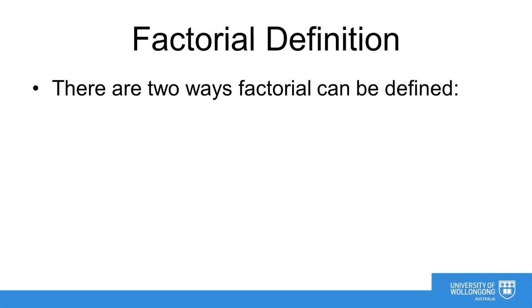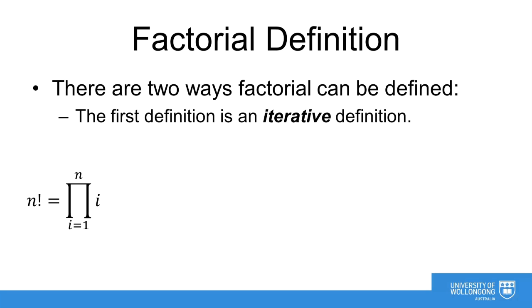But let's look at a more mathematically rigorous definition of the factorial function. There are two ways we can define the factorial. The first is an iterative definition. We see here that n factorial equals the product of all values i from 1 to n. This is essentially the same as the informal definition we arrived at earlier.